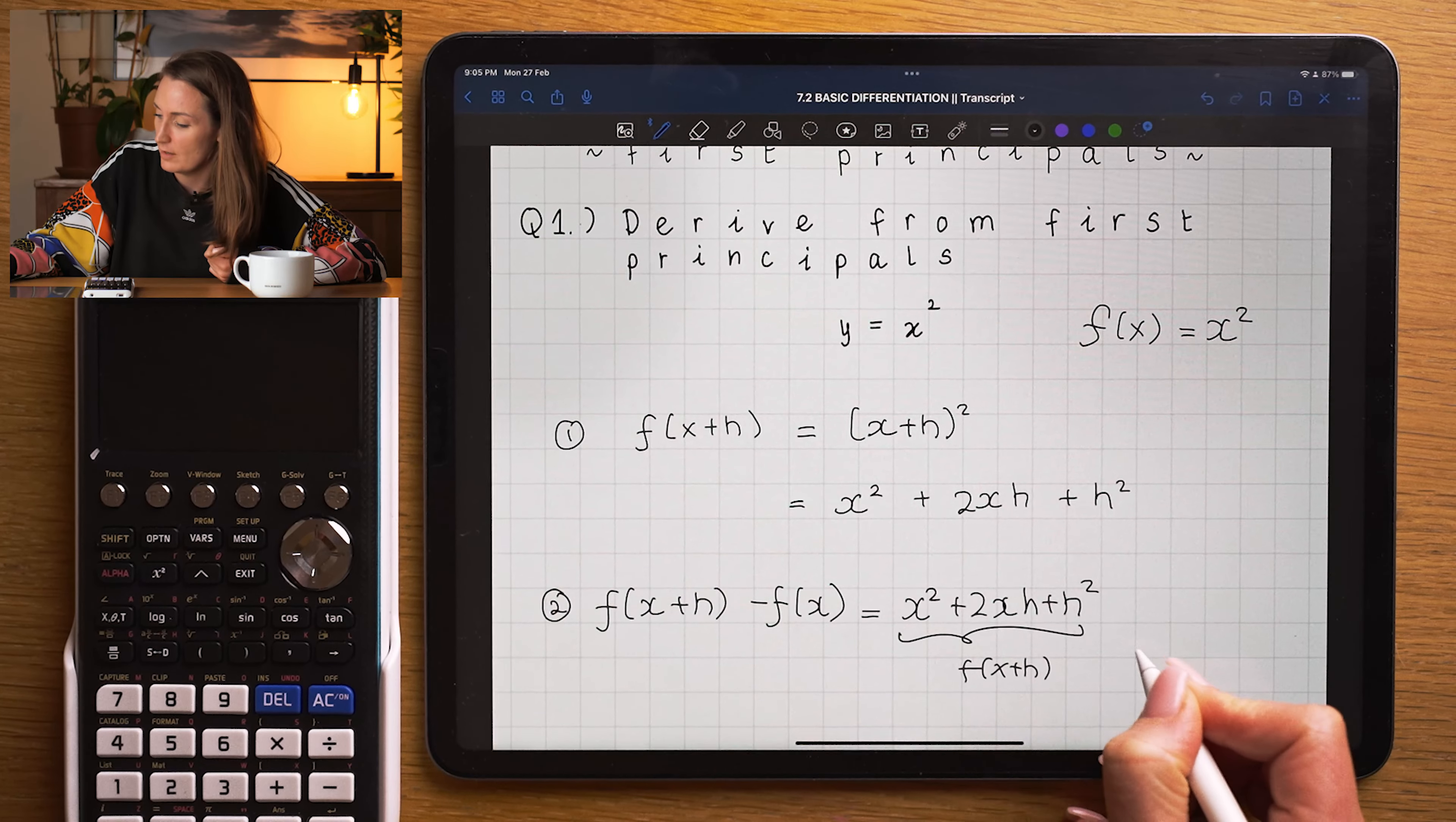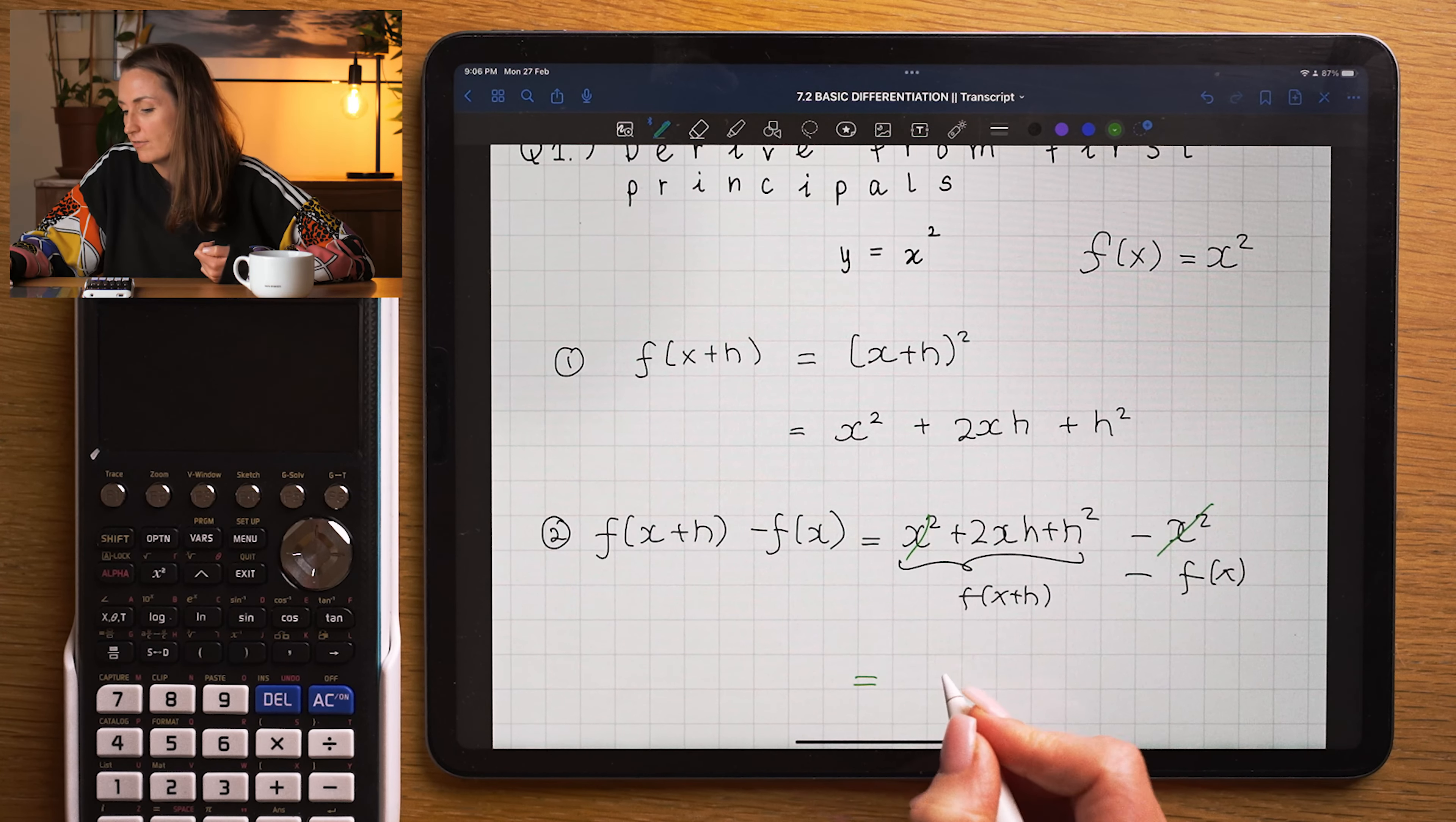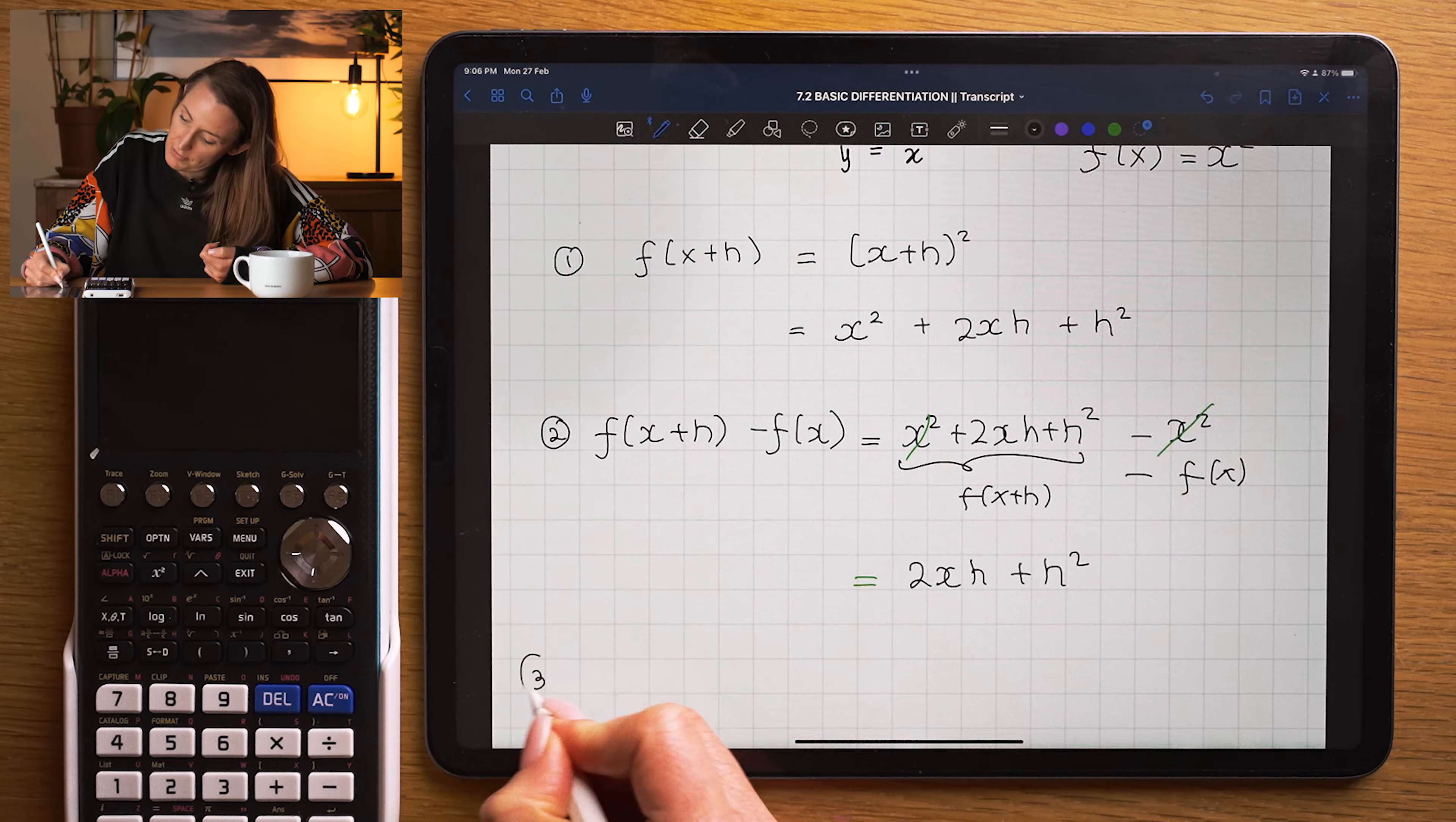and I'm going to subtract f of x, which is x squared, which means this and this is going to cancel out, and I'm going to be left with 2xh plus h squared.